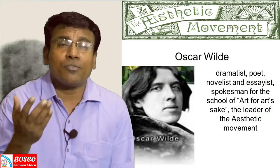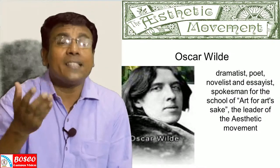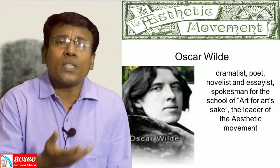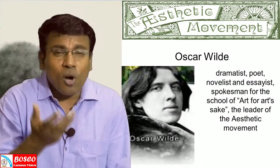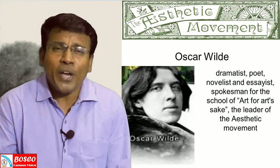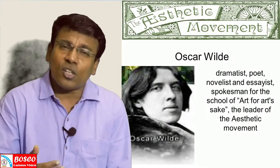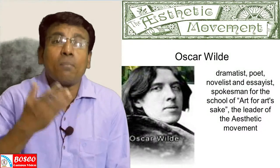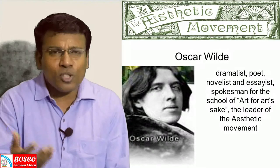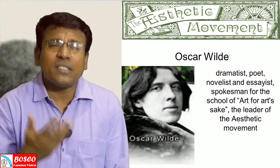Oscar Wilde, one of the foremost Aestheticians, lived between 1854 and 1900 — just 46 years. He was an Irish poet and playwright, born in Dublin. His father was Sir William Wilde, a doctor, and his mother Jane was a poet. In 1874 he became a scholar of Magdalene College, Oxford, where he became a disciple and proponent of the Aesthetic movement. From Oxford he went to London, where he was at the center of the artificial decadent society, renowned for his wit and brilliant conversations.